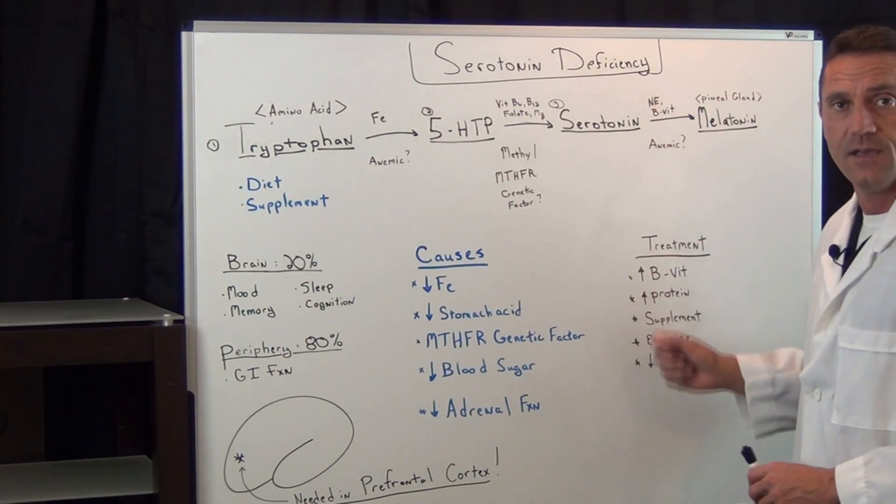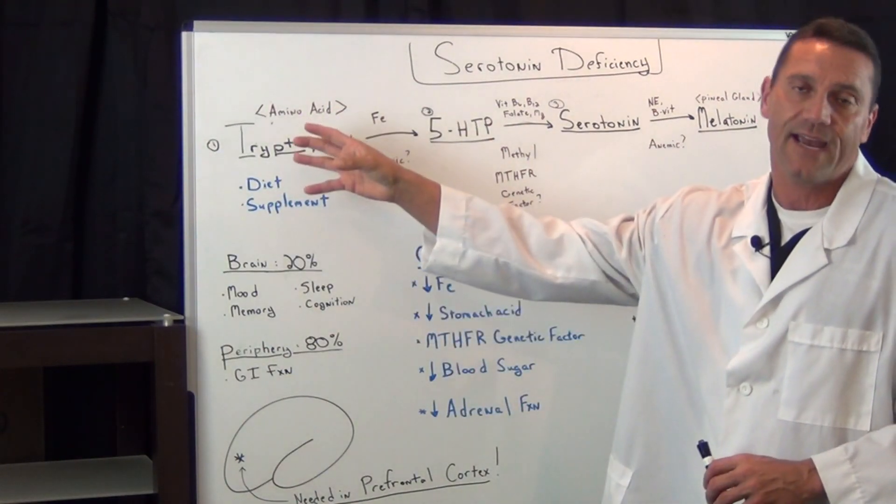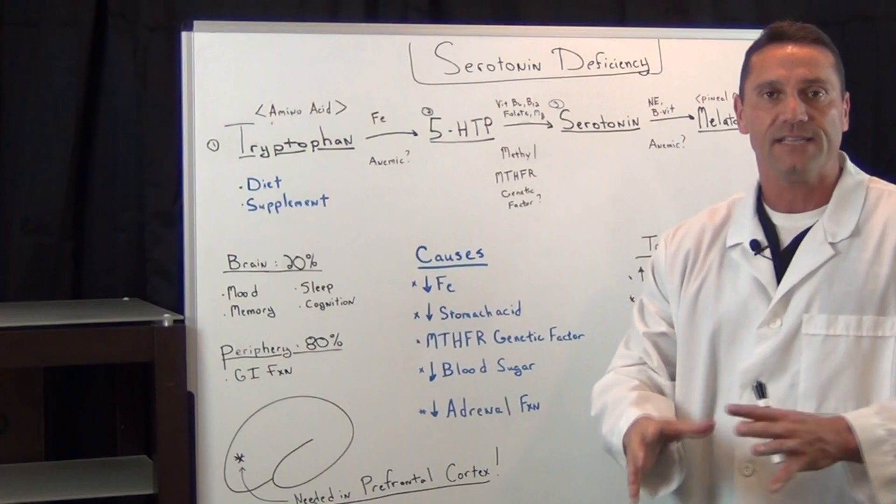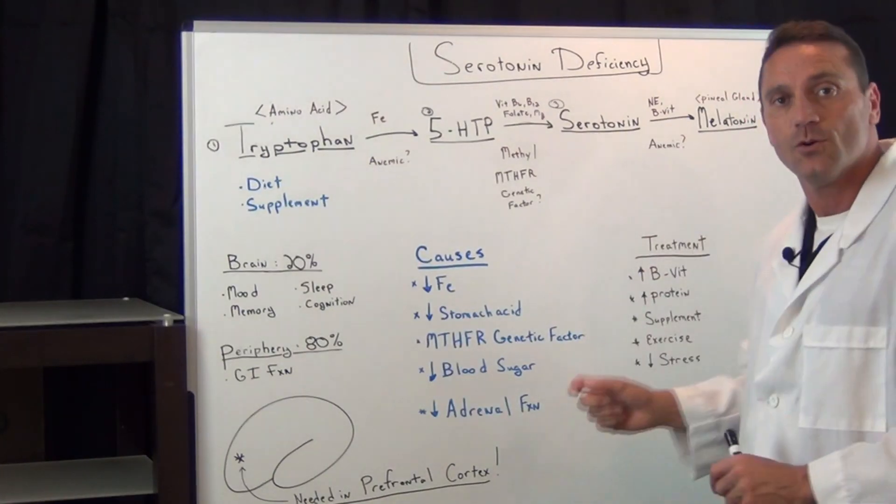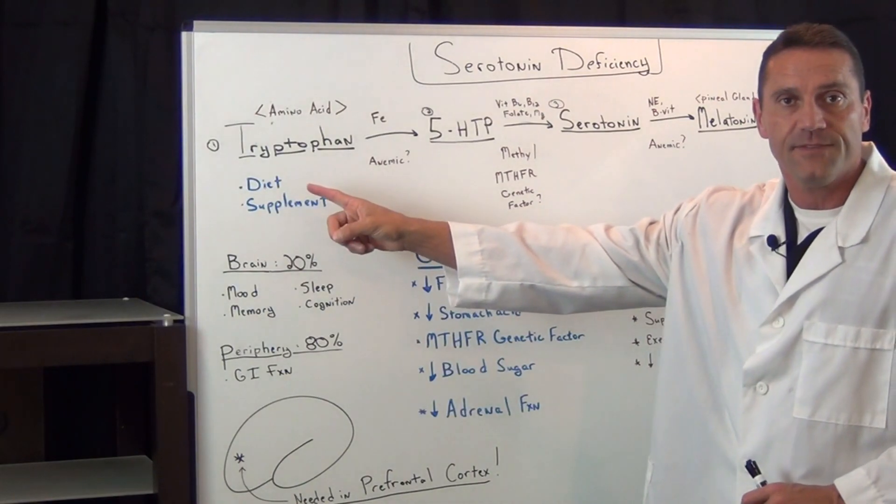Two, increase your proteins. Increasing your lean proteins because tryptophan is an amino acid. What are amino acids? Amino acids are the basic building blocks of proteins. So if you increase your proteins, you're getting sufficient amount of tryptophan.